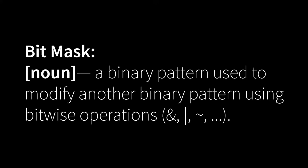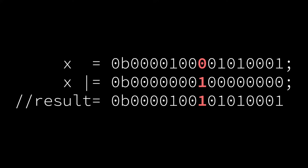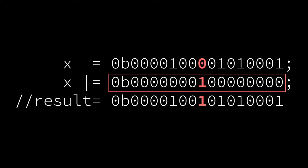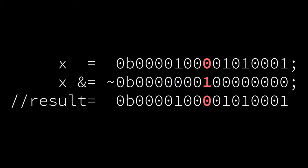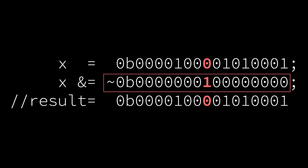If you've been watching my videos, you've seen it before — you may not have known what it was called. A bitmask is simply a binary pattern that modifies another binary pattern using bitwise operations. So when I wanted to take a bit field and set one of the bits to one with the OR operator, this pattern that does that is a bitmask. When I wanted to clear a bit using AND and complement like this, this pattern that changes the original data is called the bitmask.